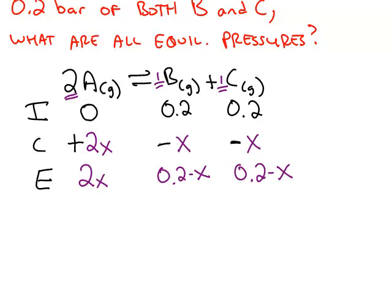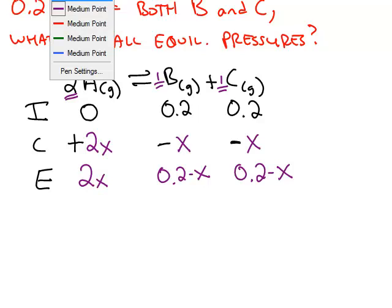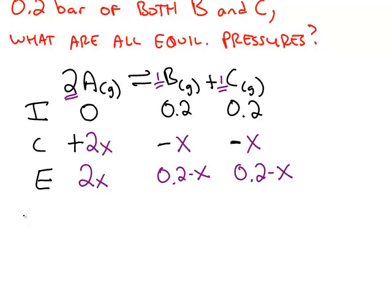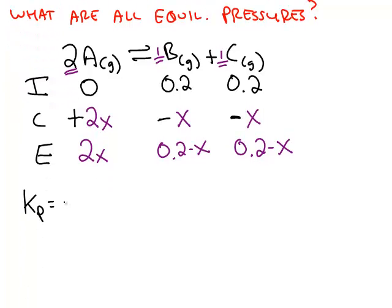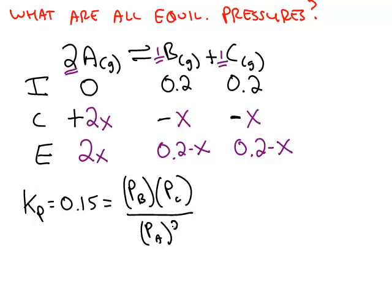Now what we have to do is solve this ICE chart using the given value of the equilibrium constant, which was 0.15. So the equilibrium constant, 0.15, we know based on this reaction that this will be the pressure of B, products divided by reactants, times the pressure of C, divided by the pressure of A, which has to be squared because of that coefficient 2.